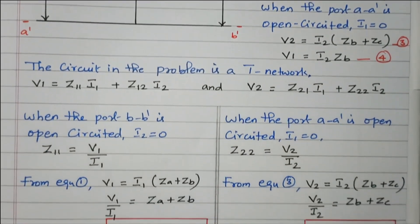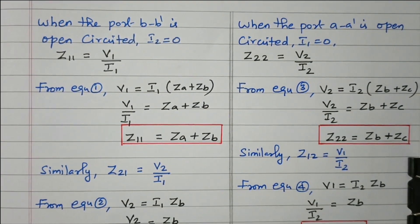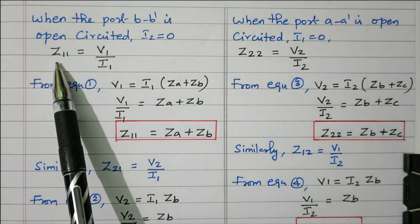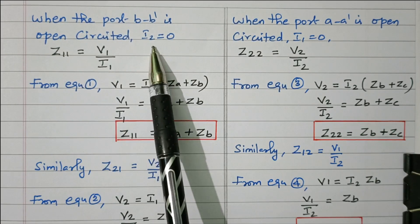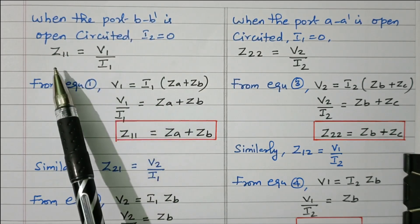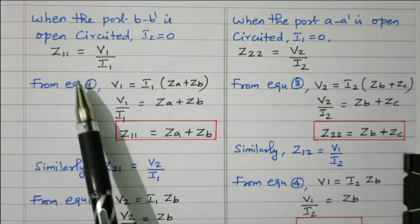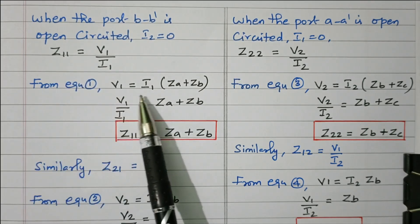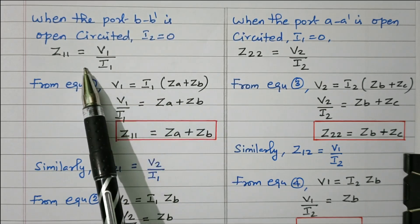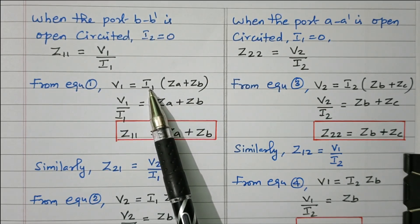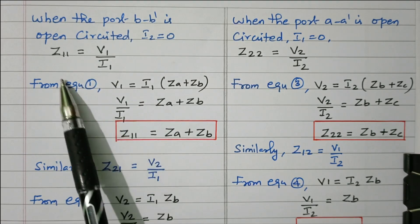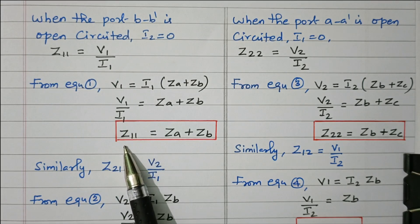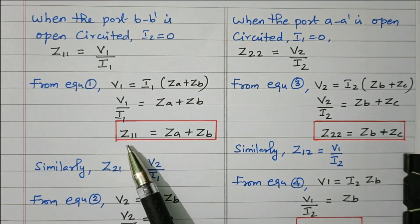We already have the four equations available. From them we can easily find these values. For Z11: when port BB dash is open circuit and I2 = 0, Z11 = V1 / I1. This is input voltage divided by input current, called the open circuit input impedance. From equation 1, V1 = I1(ZA + ZB), so V1/I1 = ZA + ZB. Therefore Z11 = ZA + ZB.